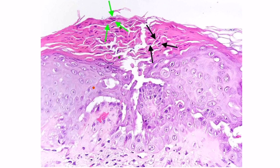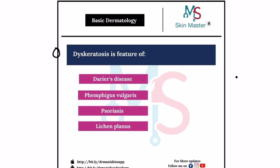Hello students, welcome back. In my last video I showed you one histological slide and I asked you to identify the cells which are marked by these green and black arrows. So now we are going to discuss this with the help of one question. In this question they are asking: dyskeratosis is a feature of which of the following condition?